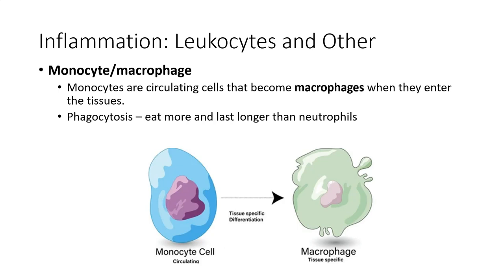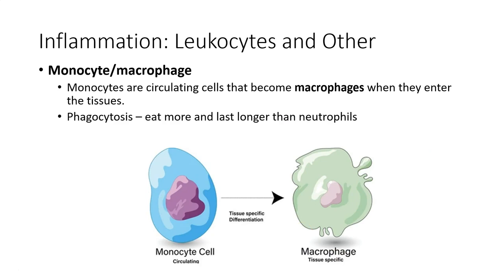Neutrophils are short-lived first responders because their powerful enzymes should not remain in the tissue too long. After the initial response by the neutrophils, monocytes — circulating cells — will squeeze into the tissue and differentiate into macrophages. A macrophage is another phagocytic cell that eats bacteria and cellular debris. Macrophages can eat more and last longer than neutrophils — think of them as the hospital staff, like nurses, who take care of the patient for much longer and help resolve the problem.